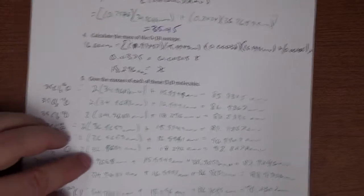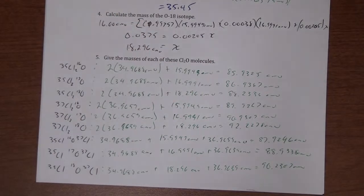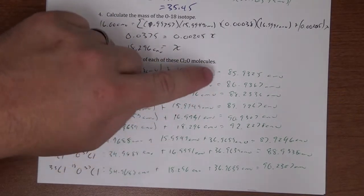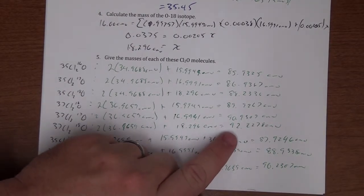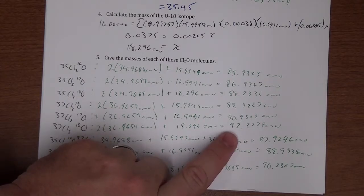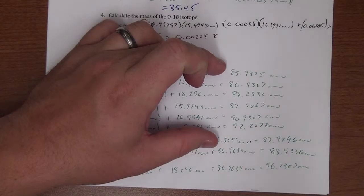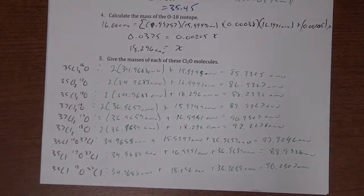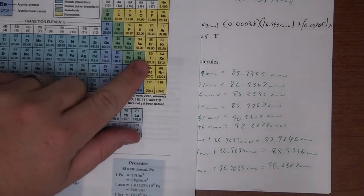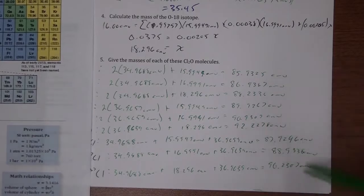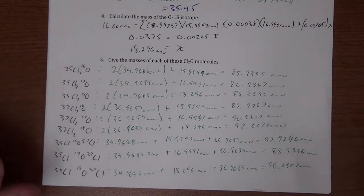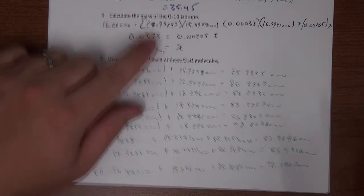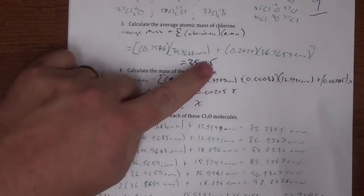Based on this isotopic composition, the mass of Cl₂O can range from 85.93 up to 92.2278 AMUs. We don't usually discuss these individual ranges because we use average atomic masses from the periodic table, which give us an average molecular mass. Since we don't know the exact isotopic composition at any one time, we stick to the average values off the periodic table.